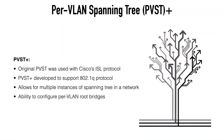PVST+, or per VLAN Spanning Tree Plus, is Cisco's modern implementation of Spanning Tree. Traditional Spanning Tree creates only a single Spanning Tree instance for a network regardless of the number of VLANs in place, meaning there can only be one root bridge and traffic for all VLANs uses the exact same path. The original standard was PVST, which was used with Cisco's proprietary ISL trunking protocol, and PVST+ was later developed to support 802.1Q, which is the industry standard for trunking.